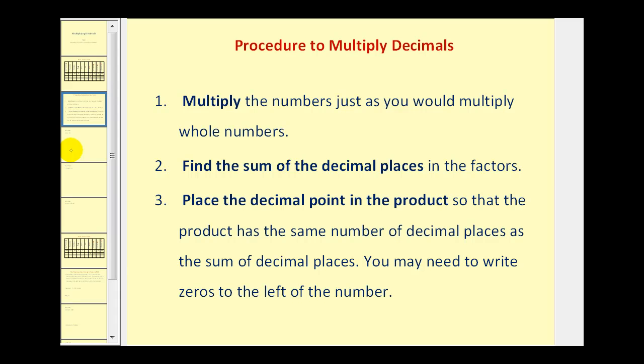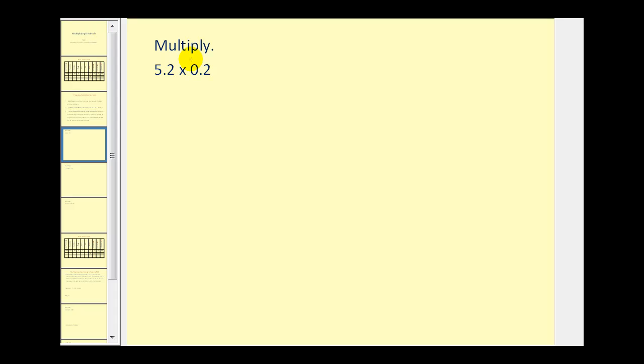Let's look at an example and then we'll explain why we have to do what we're doing. Let's go ahead and write this vertically. We'll multiply 5.2 times 0.2. First, just multiply ignoring the decimals. 2 times 2 is 4, and 2 times 5 is 10, so we get 104.